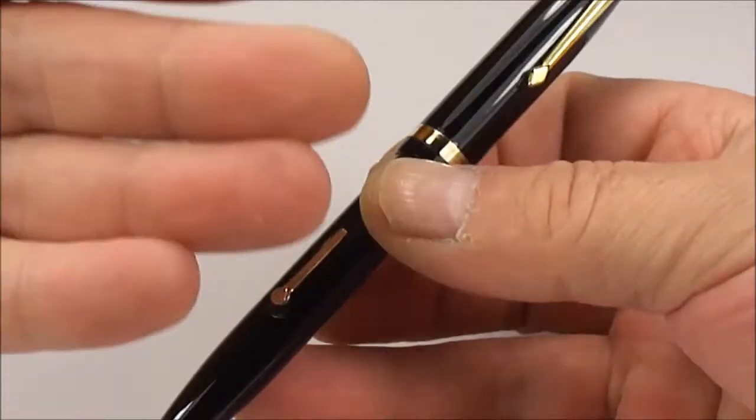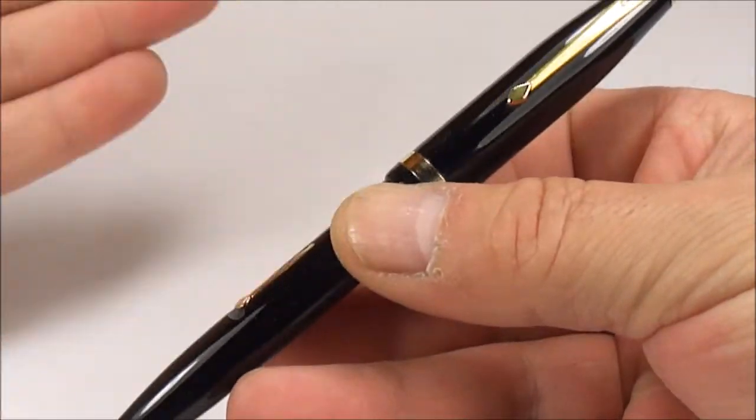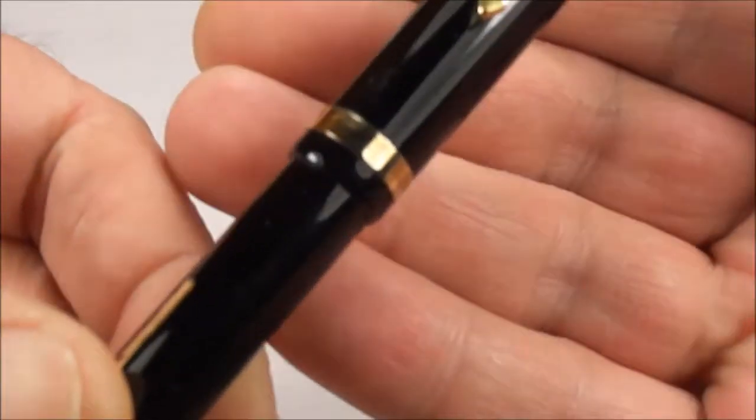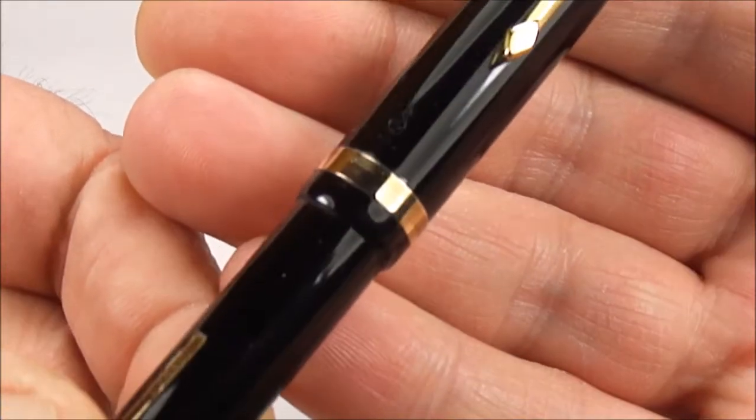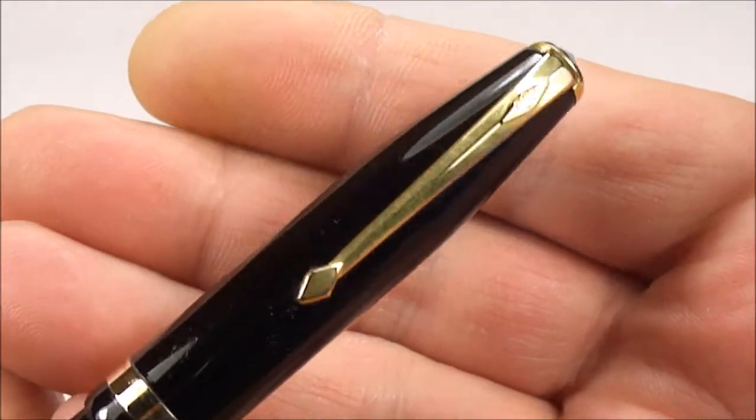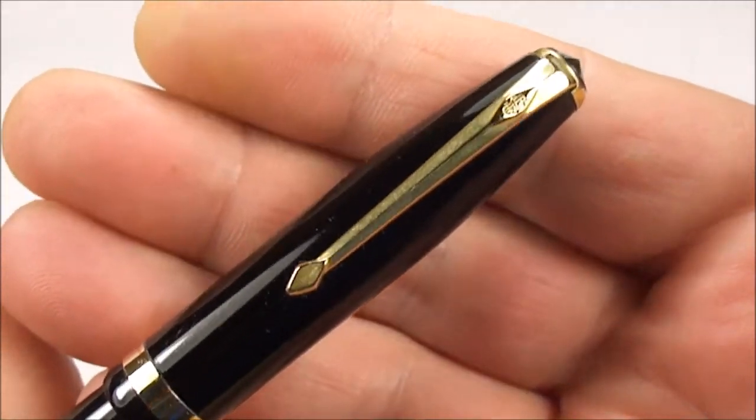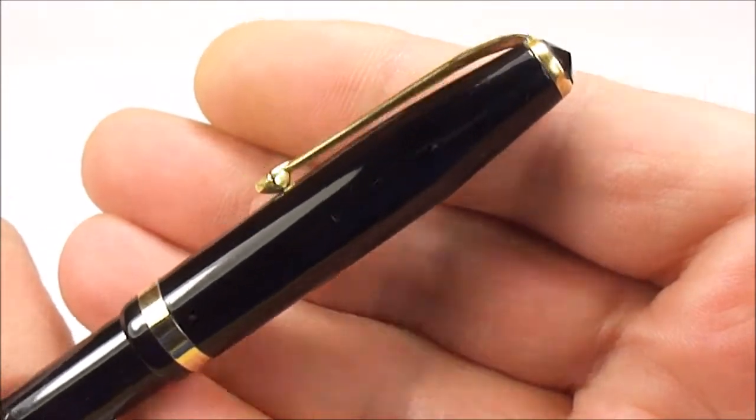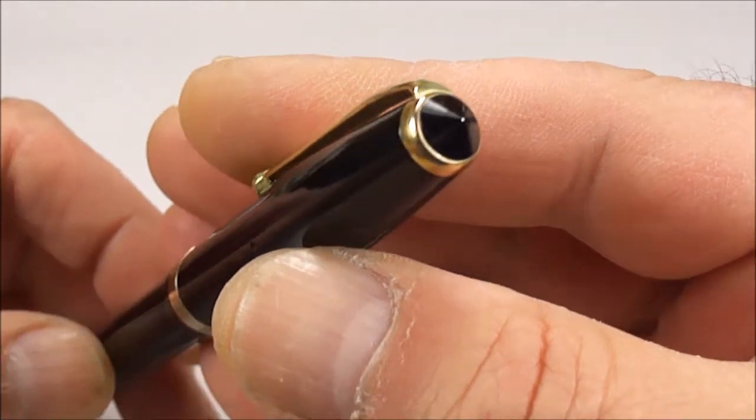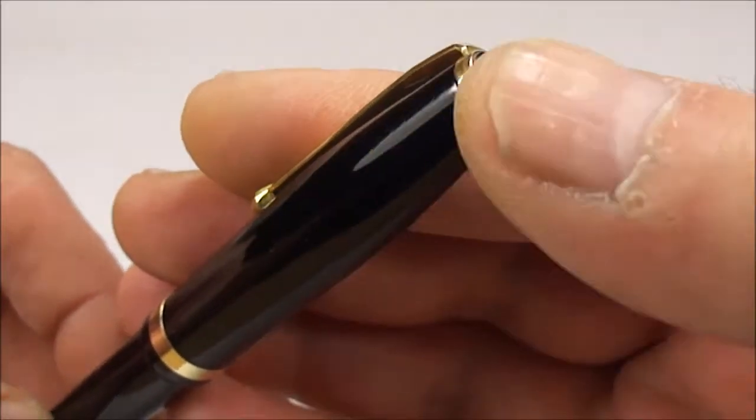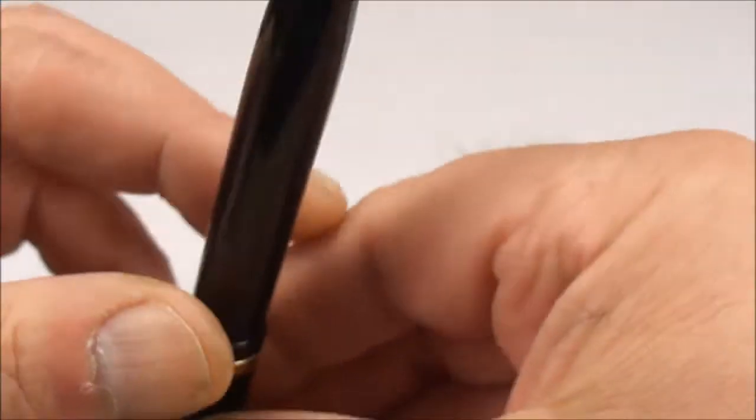This particular one is absolutely gorgeous, nice and unassuming classic black with gold-plated trim. You can see it's got this quite large cap band to the bottom of the barrel and the very recognizable diamond clip with the Conway Stewart logo in the diamond to the very top.